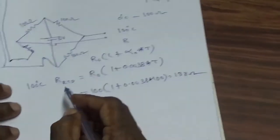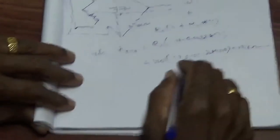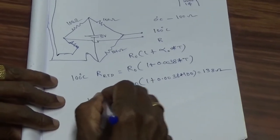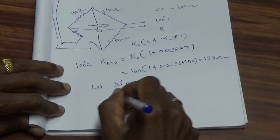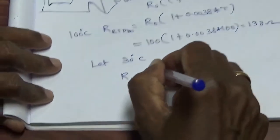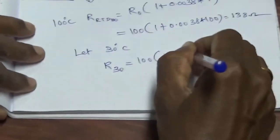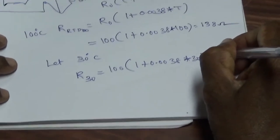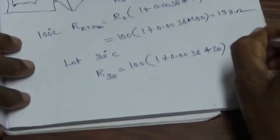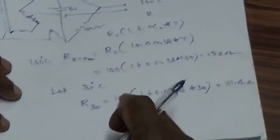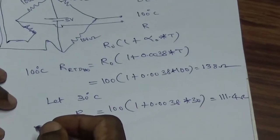Let us check the expected output of this bridge at room temperature and at 100 degrees centigrade. Let us assume room temperature is about 30 degrees centigrade. For 30 degrees centigrade, the RTD resistance R₃₀ = 100 × (1 + 0.0038 × 30), which comes to about 111.4 ohms. So what is the output voltage if the bridge is supplied with 5 volts?